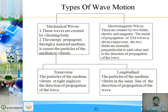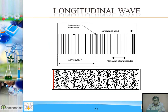In transverse waves, the particles of the medium vibrate at right angles to the direction of propagation of the wave. In longitudinal waves, the particles of the medium vibrate in the same line as the direction of propagation. Electromagnetic waves are created by electric and magnetic fields. The mode of propagation of electromagnetic waves is always transverse, with the two fields mutually perpendicular to each other and to the direction of propagation.